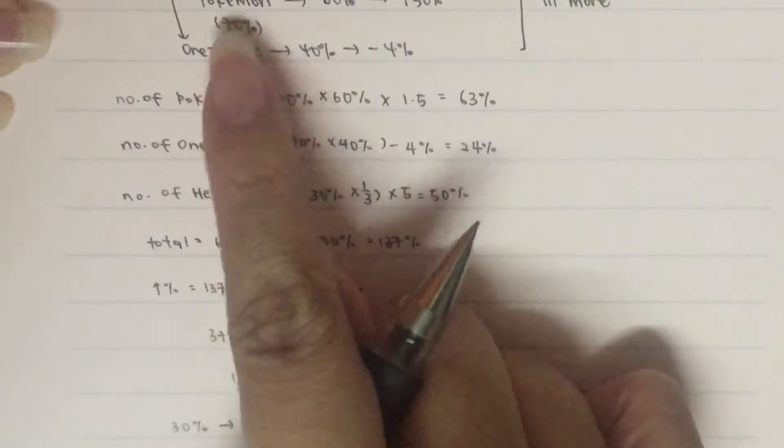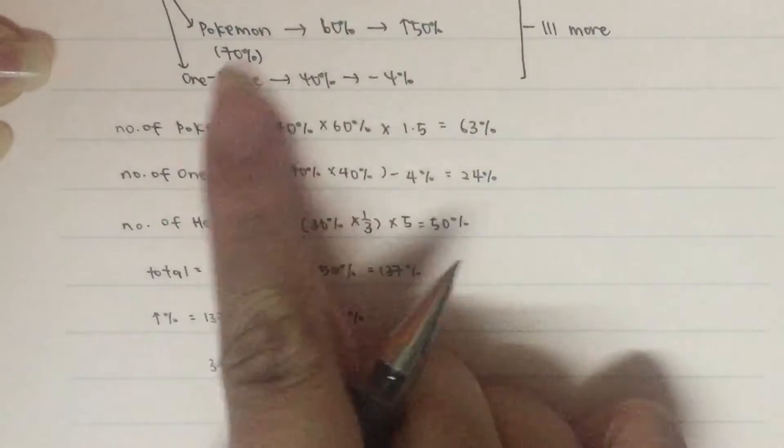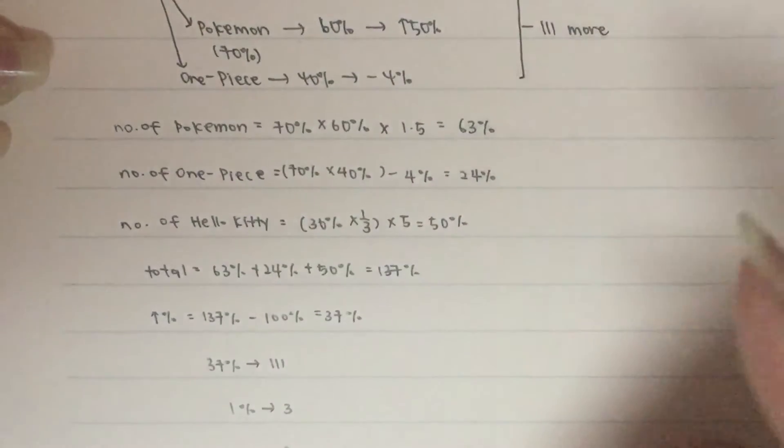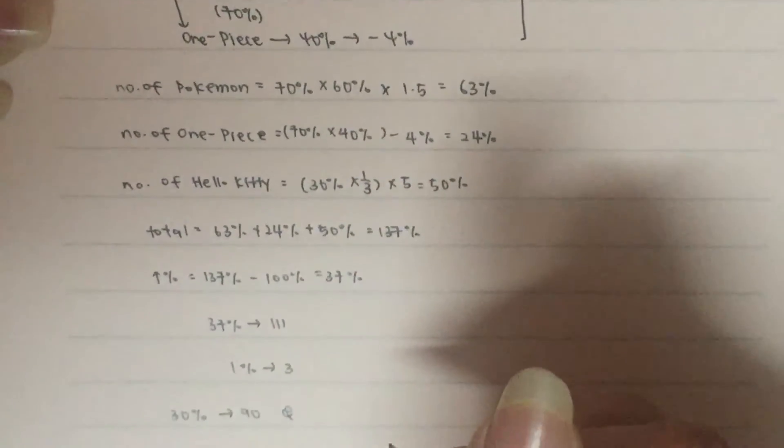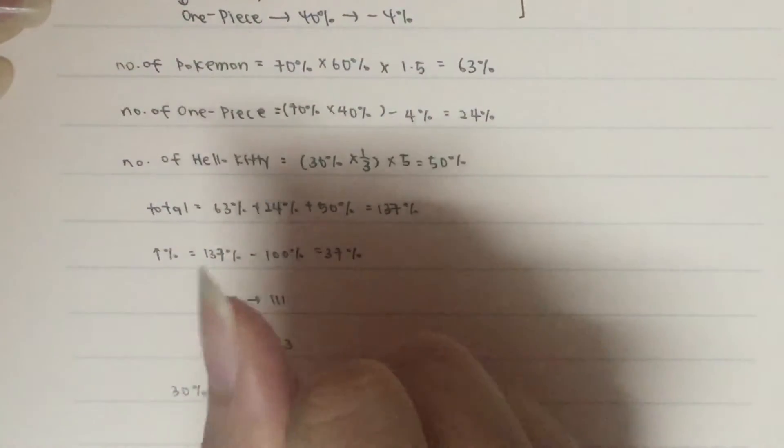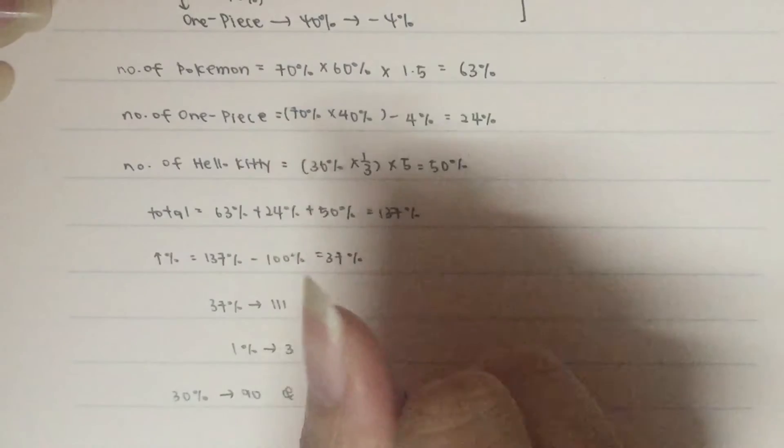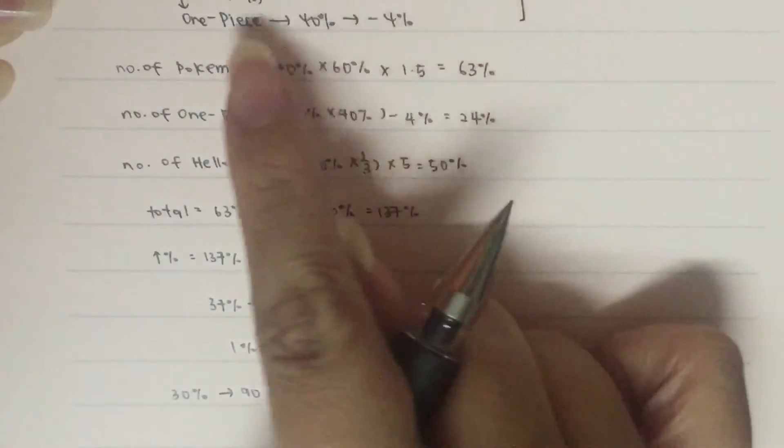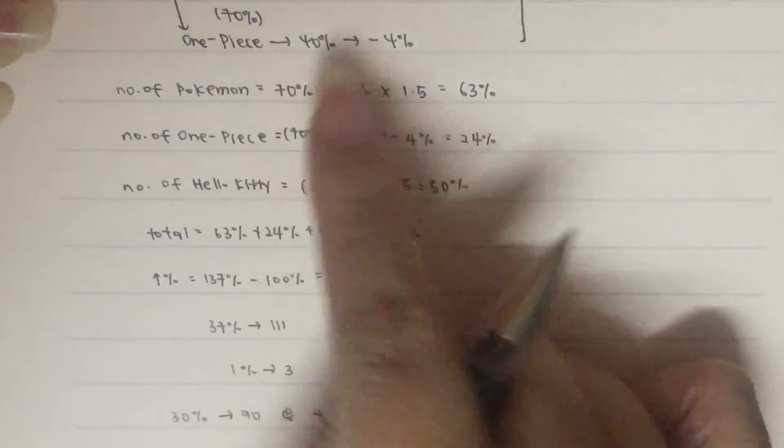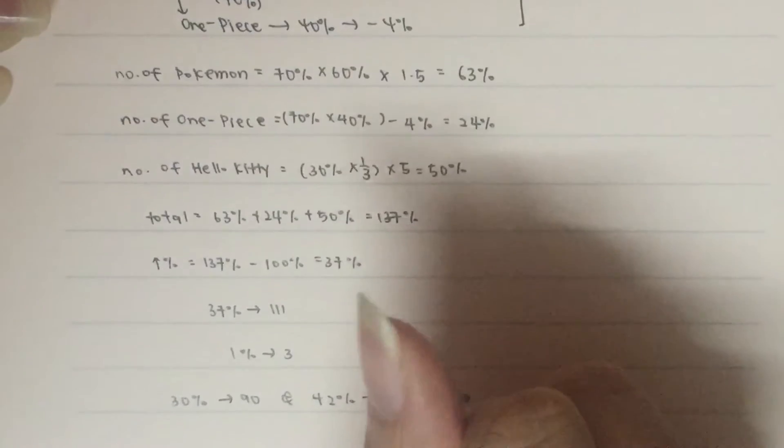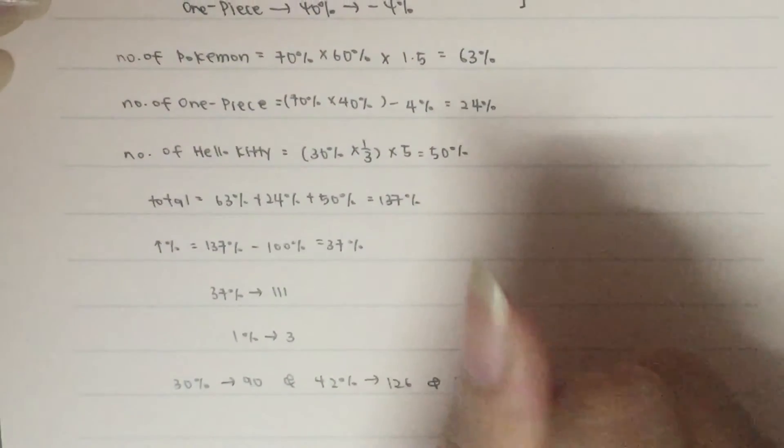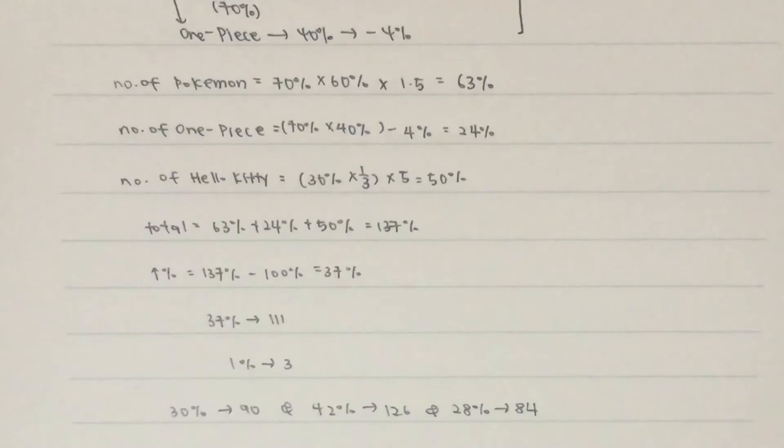And Pokemon will be 70% or 60%. 7 times 6 is 42. So, we have 42%, which equals 126, and for the last one, that would be 7 times 4, which is 28%, that would be 84. That would be the answer.